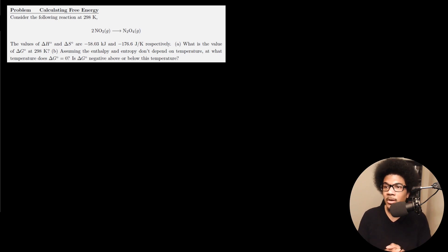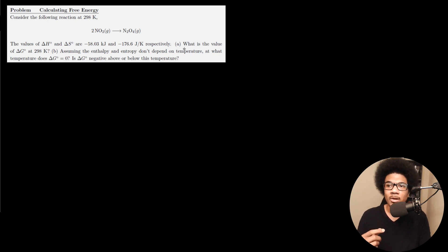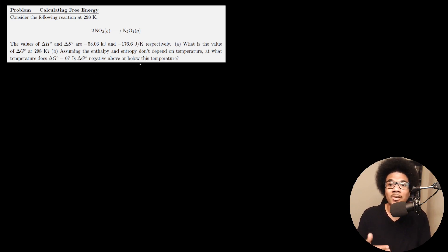The first problem gives you a reaction at 298 Kelvin. The values of ΔH and ΔS are 58 kilojoules and 176 joules per Kelvin respectively. It asks two questions: first, what is the value of ΔG at 298 Kelvin? Part B asks, assuming enthalpy and entropy don't depend on temperature, at what temperature does ΔG equal zero, and is ΔG going to be negative above or below this temperature?